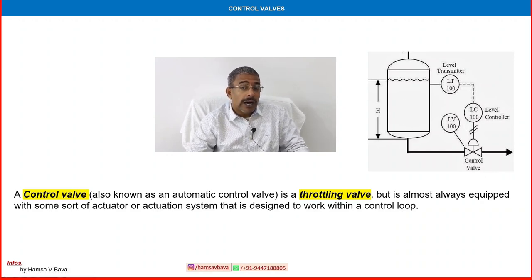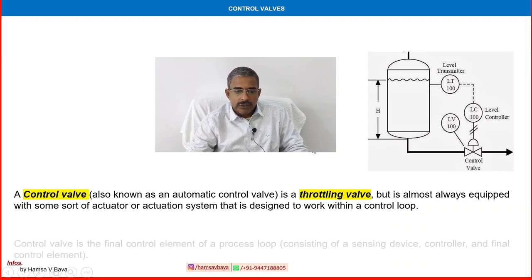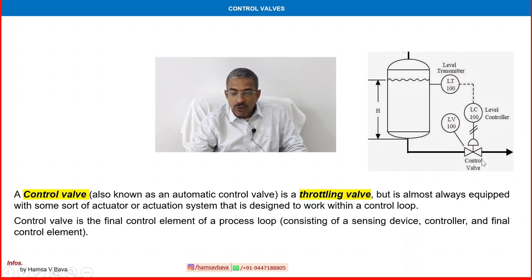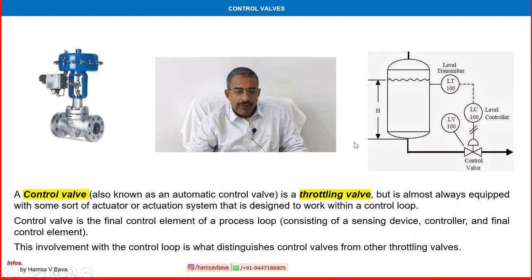I kindly request you to review or watch the type of valves plus process instrumentation videos — around 10 videos are there — where we discuss more on control systems, control loops, open loop and closed loop. Control valve is a throttling valve and is a final control element in a process loop consisting of a sensing device, controller, and final control element. The sensing device is the sensor and transmitter together, and the controller is here. The control valve is the final control element — that is part of the control loop.